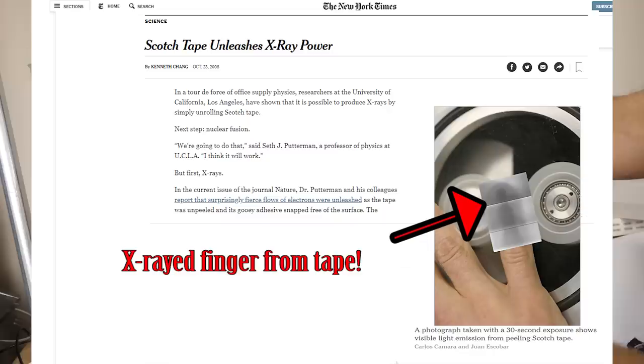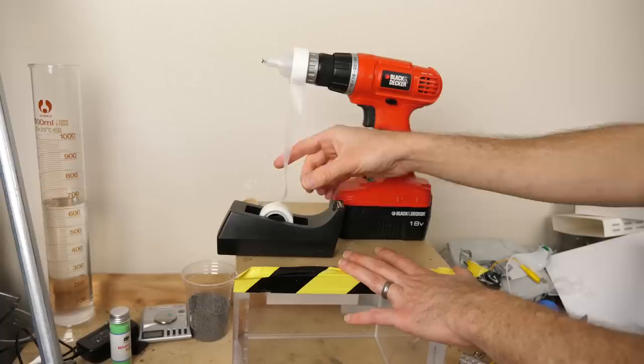So because triboluminescence creates free electrons, scientists have actually been researching whether or not they could make x-rays by unraveling tape. But the key is you can't do it in regular air, you have to do it in a vacuum. So I'm going to try doing it in a vacuum, unraveling the tape in a vacuum and see if I can get x-rays to occur.